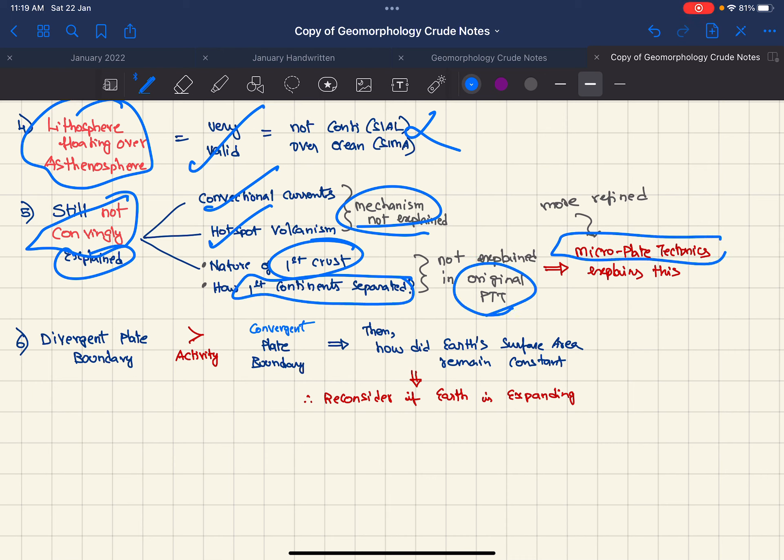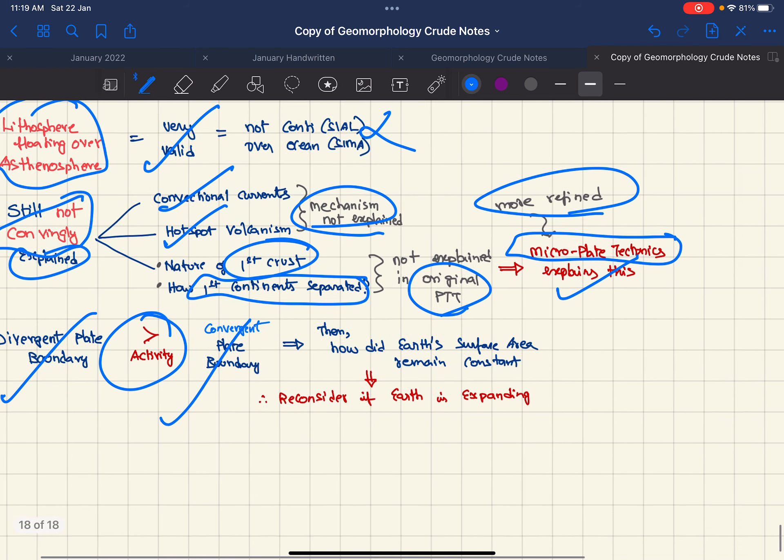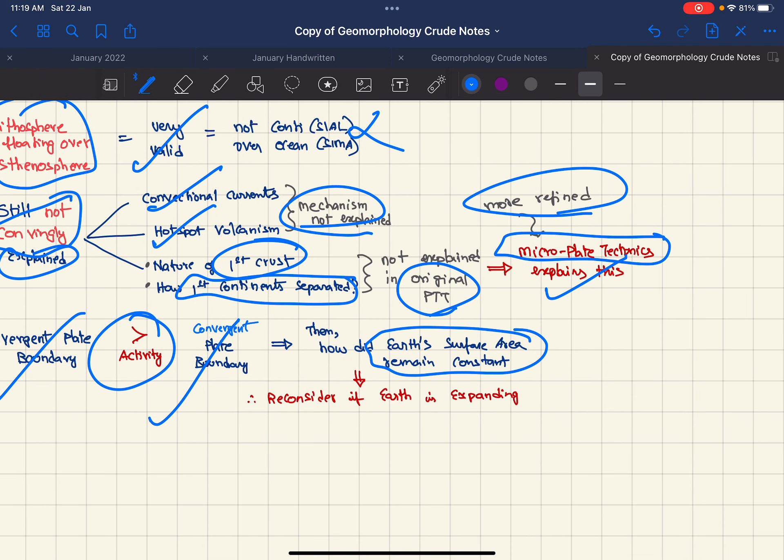But microplate tectonic theory, which is a more refined form of PTT, can explain this. Next, the divergent plate boundary has much more activity than the convergent plate boundary, so earth surface area should be expanding. However, according to PTT the earth surface area remains constant, so we must reconsider if the earth is expanding.